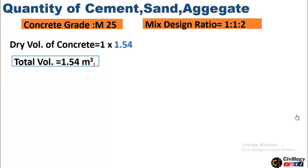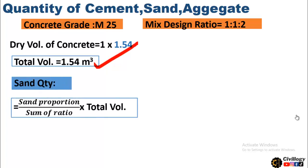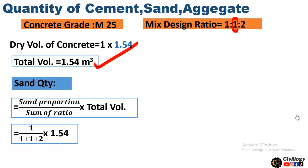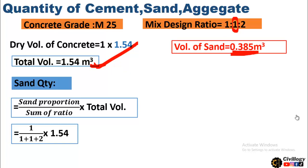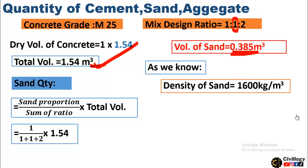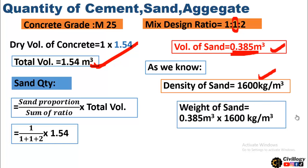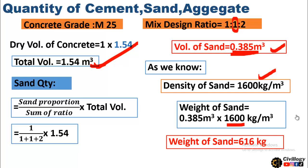For sand, the same formula is used: sand proportion divided by sum of ratio, multiplied by total volume. The sand proportion is also 1, so it becomes 1 divided by 4, multiplied by 1.54 cubic meters — giving a sand volume of 0.385 cubic meters, the same as cement. However, the weight will be different due to different density. The density of sand is 1600 kg per cubic meter, so the weight of sand equals 0.385 × 1600 = 616 kilograms.